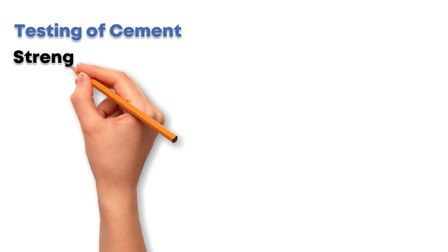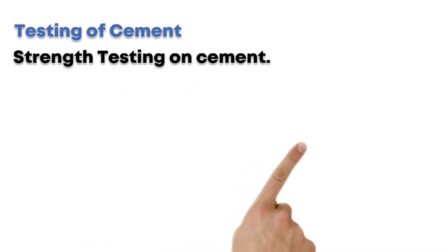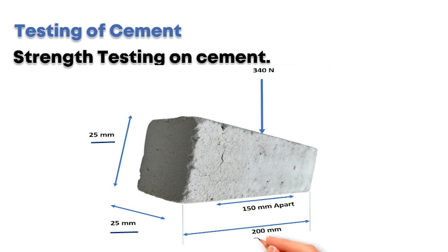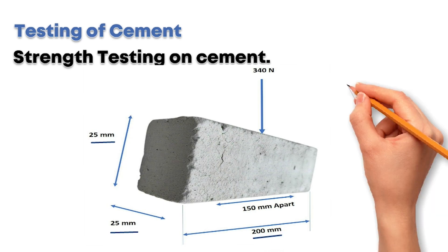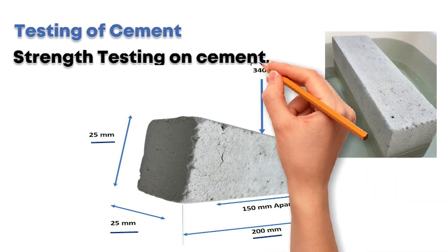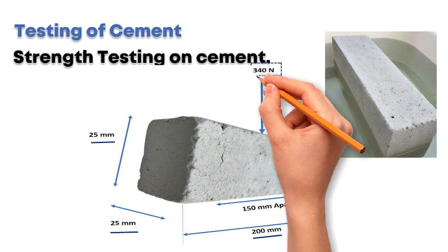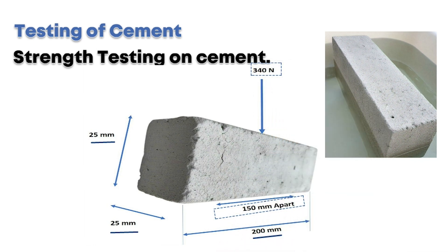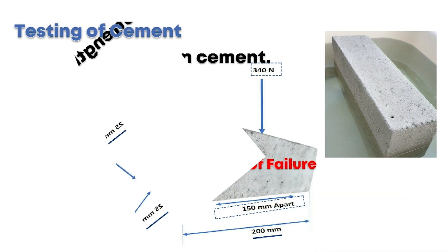The strength test on cement: prepare a block of cement to be tested of size 25 mm x 25 mm x 200 mm. Immerse the block of cement in water for 7 days. Subject the block to a point load of 340 N by placing it over a support 150 mm apart. The sample should show no sign of failure under the application of load.